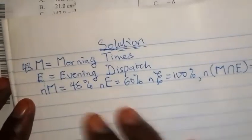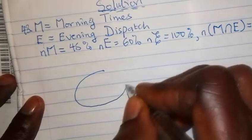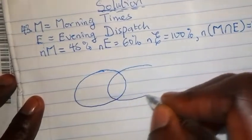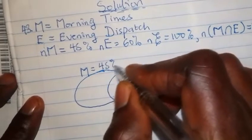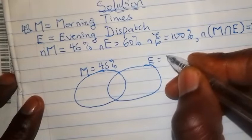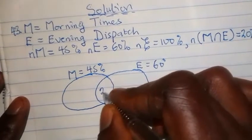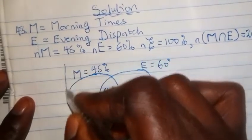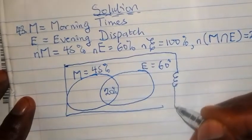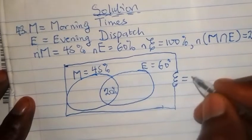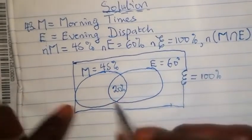We represent this information on a Venn diagram. I draw two overlapping oval shapes: the first represents M with 45 percent and the second represents E with 60 percent. The common elements between M and E — the intersection — is 20 percent. I enclose the diagram in a rectangle representing the universal set, placing 100 percent there.